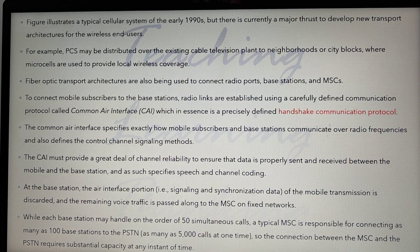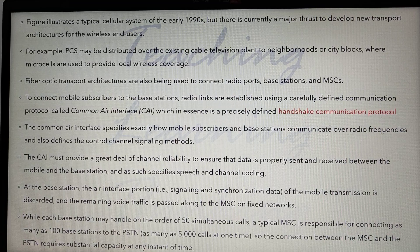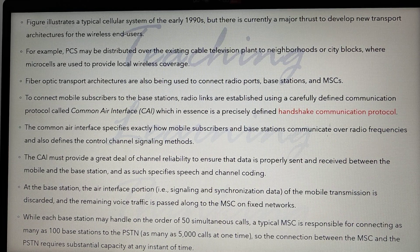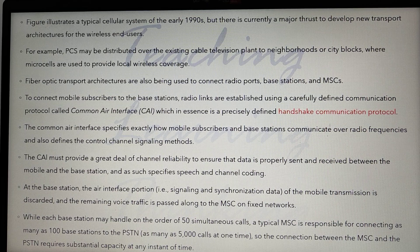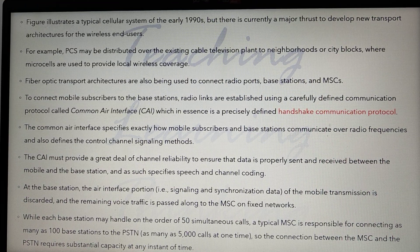The Common Air Interface, or CAI, is a precisely defined handshake communication protocol. The CAI specifically specifies exactly how mobile users and base stations communicate over radio frequencies, and also defines the control channel signaling methods. The CAI must provide a great deal of channel reliability to ensure that data is properly sent and received between the mobile and the base station, including speech and channel coding.